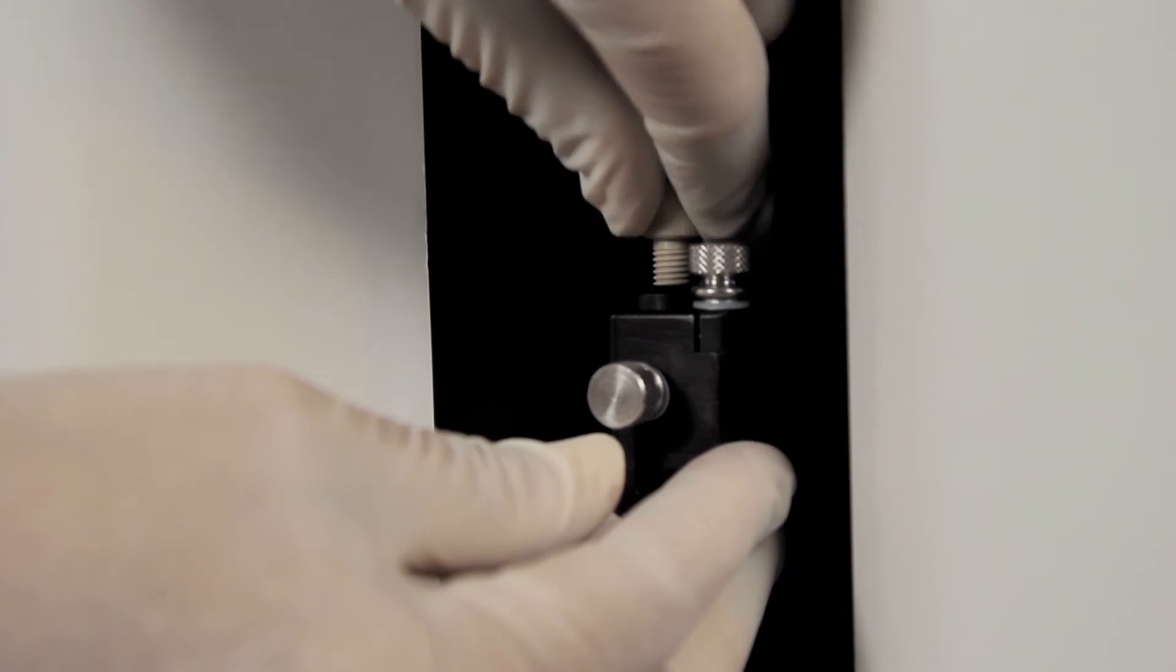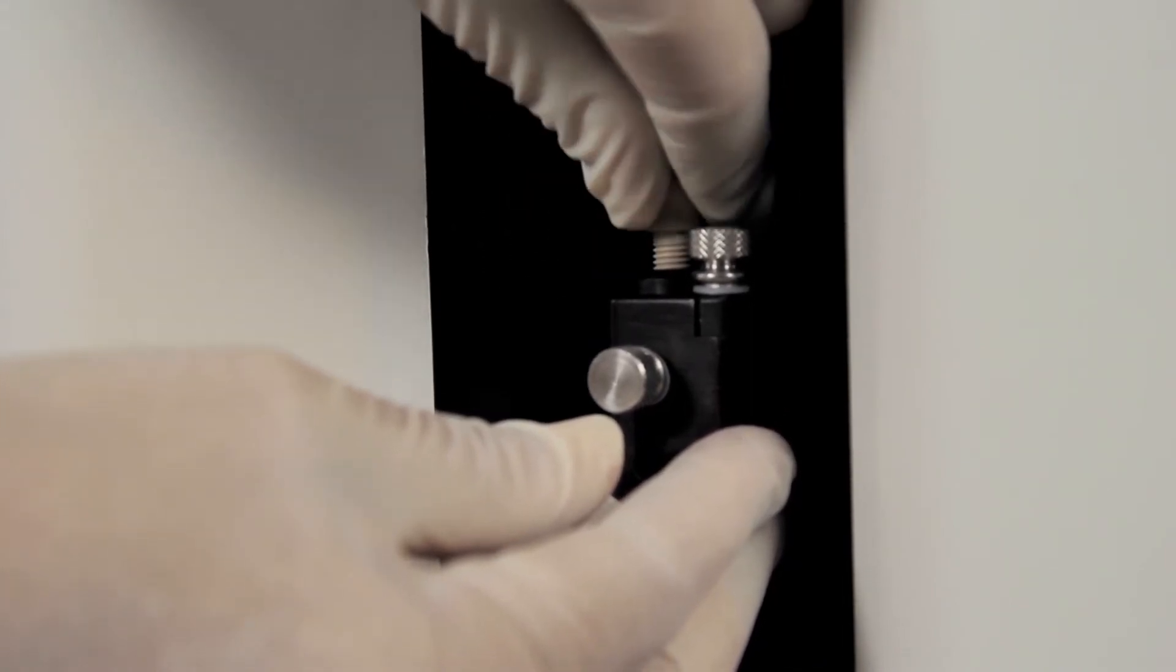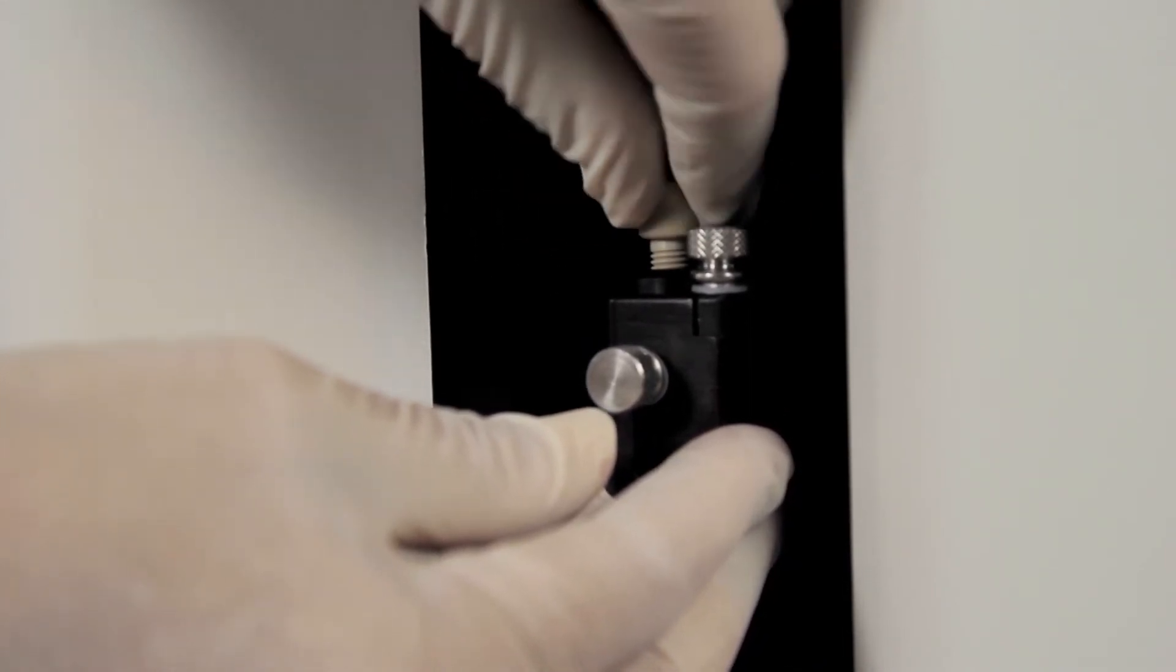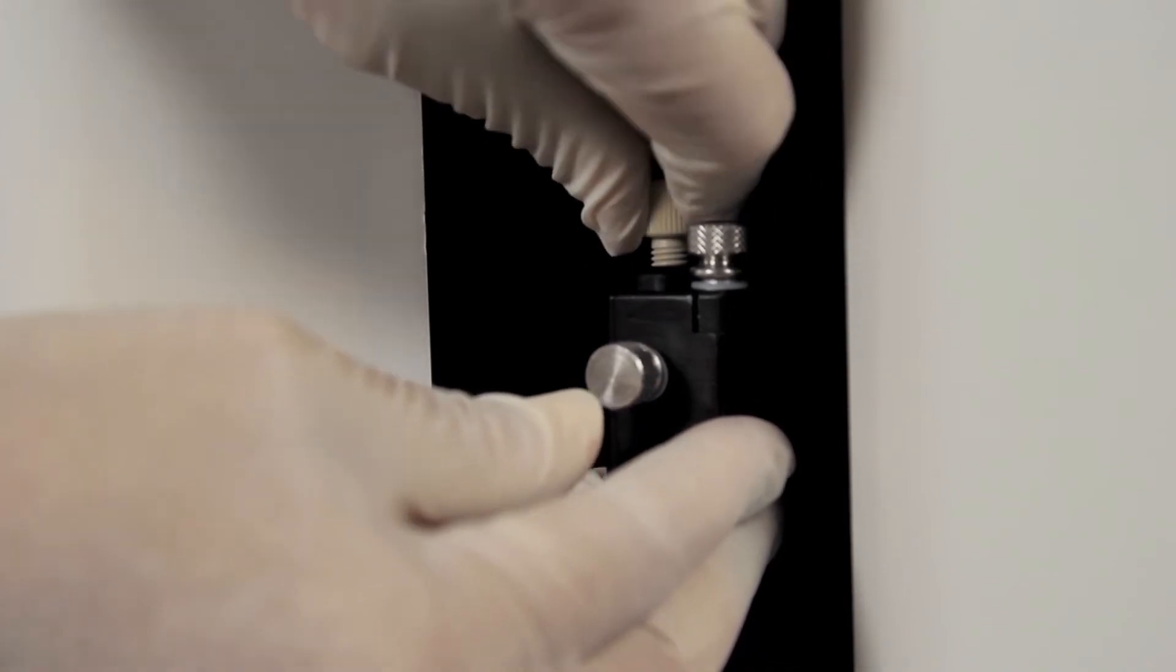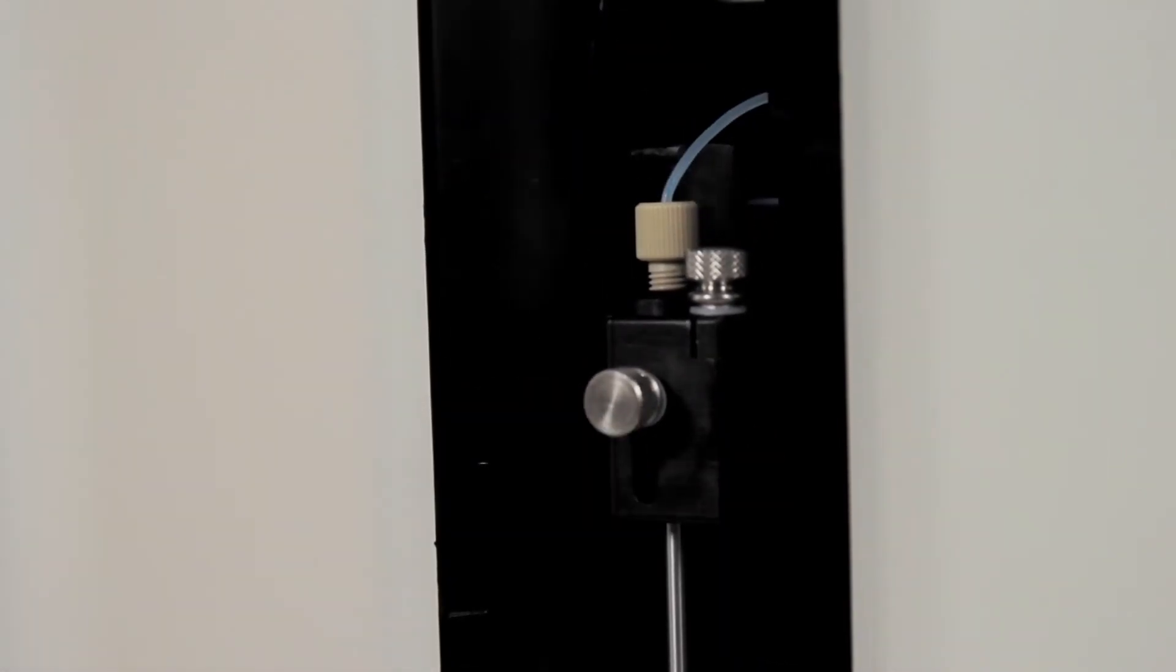Replace the tubing connector and tighten by grasping the sample arm and turning the connector clockwise. Take care that the threads are correctly aligned while tightening the connector and do not over tighten.